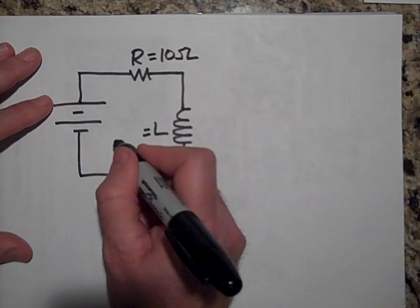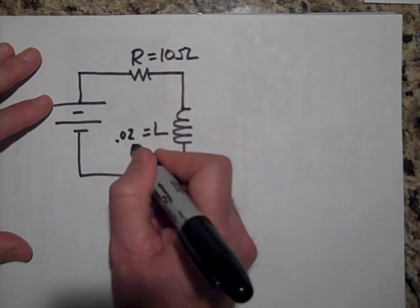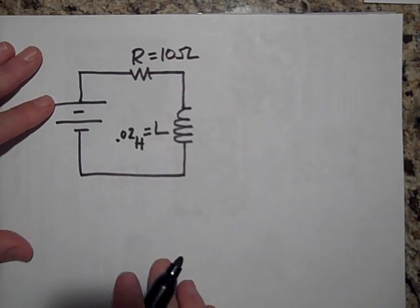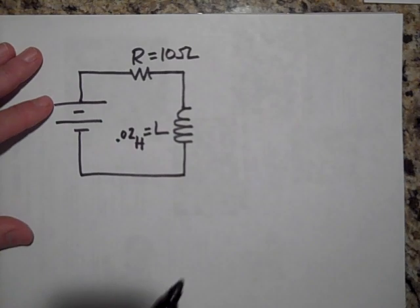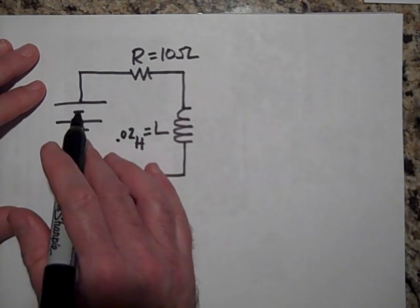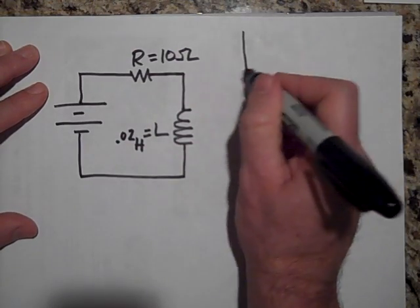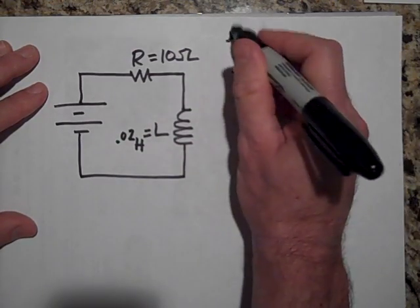I didn't leave myself enough space, but that's 0.02 henrys. Then, I'm sure if you want to know just how long, like when you close this circuit, what's going to happen is the current is going to build up.